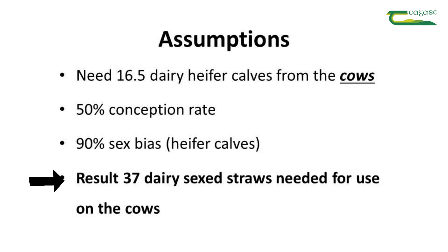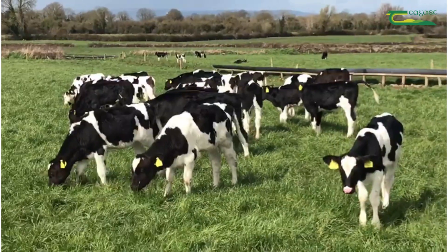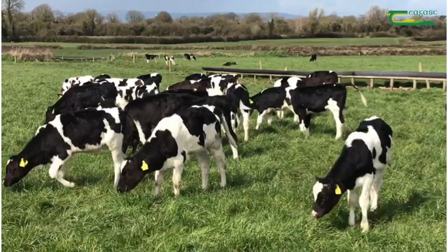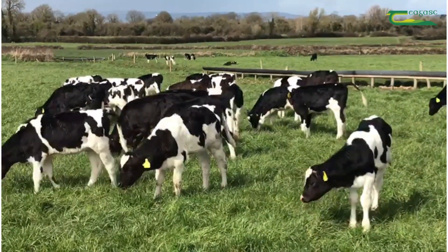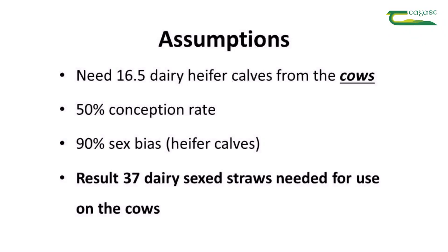Those 37 straws will give us 16.7 female calves. Adding that to the 13.5 from heifers, we've achieved our 30 dairy female calves. It will also give us 1.9 male calves, and if all repeats go to beef AI or a beef stock bull with a 90% final in-calf rate at the end of a 12-week breeding season, that gives us 71.4 beef cross calves.